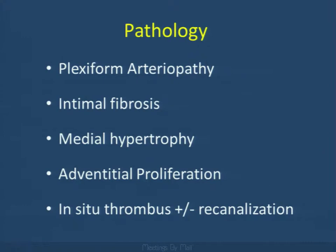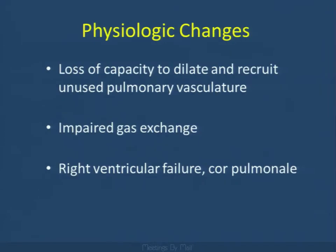Pathologically, the understanding is one of plexiform arteriopathy, intimal fibrosis, medial hypertrophy, adventitial proliferation, and possibly areas of in situ thrombosis and recanalization. The subsequent physiological changes are loss of capacity to dilate and recruit unused pulmonary vascular bed, leading to severely impaired gas exchange and eventually cor pulmonale and right ventricular failure.